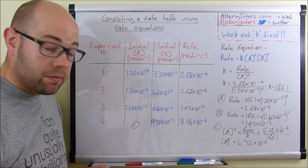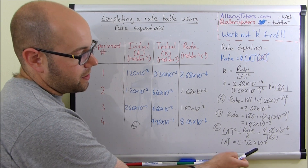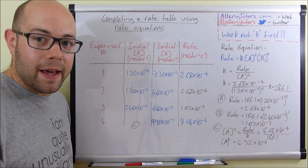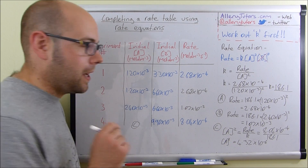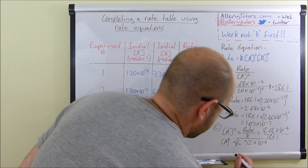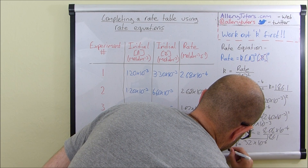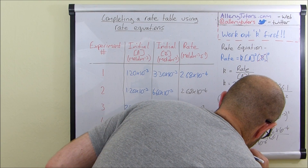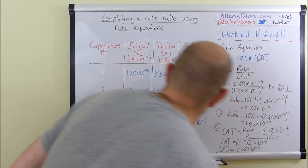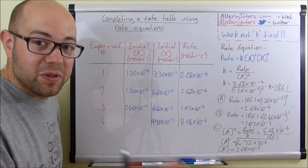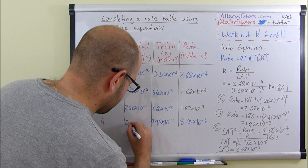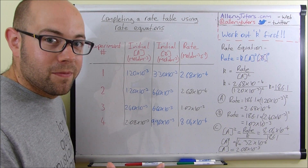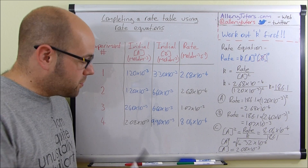Here's an important step that many people miss: this value 4.32 × 10⁻⁶ is [A] squared, not [A] itself. You must square root that number to get the concentration of A. Square rooting it gives [A] = 2.08 × 10⁻³. Examiners specifically look for whether you understand this step, so don't overlook it.